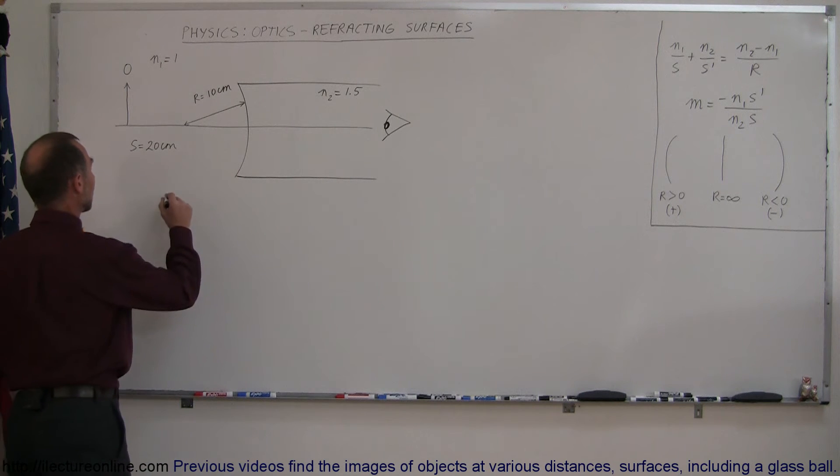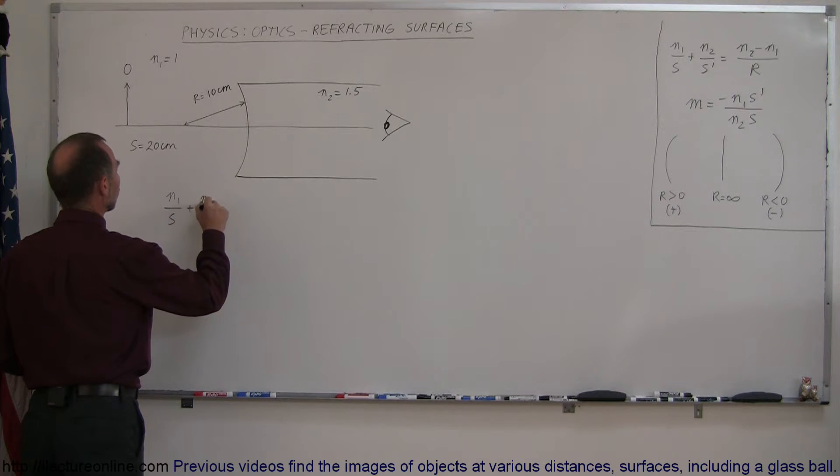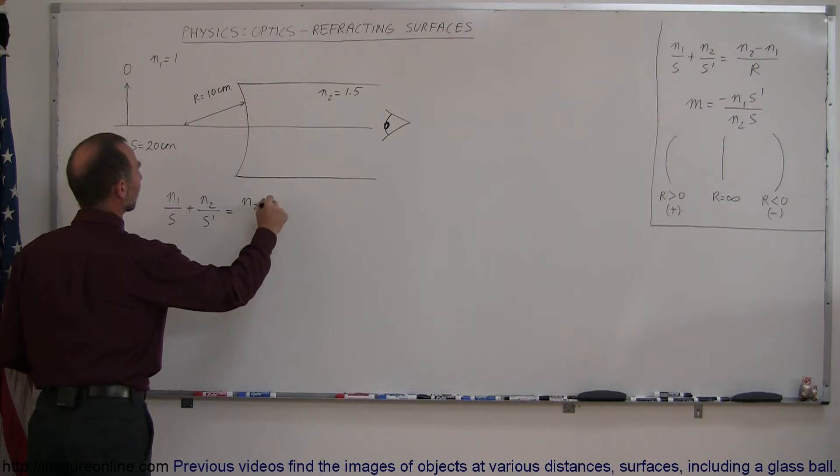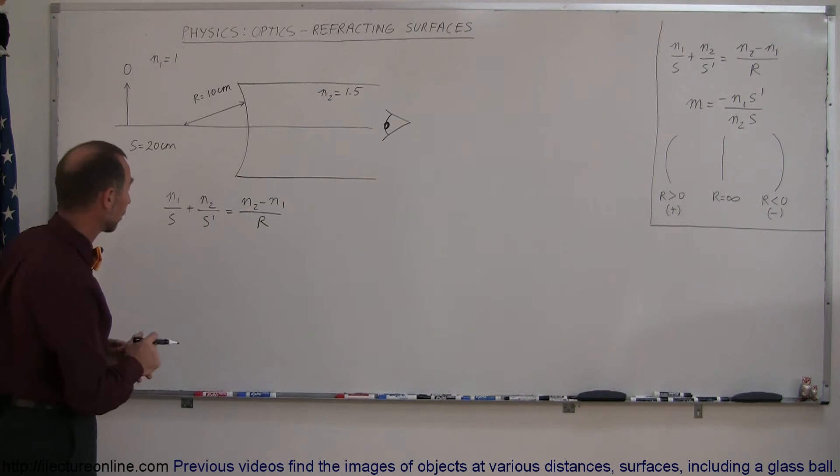Using the equation, we have N1 over S plus N2 over S prime is equal to N2 minus N1 over R being the radius of curvature. And then let's now plug in the numbers.